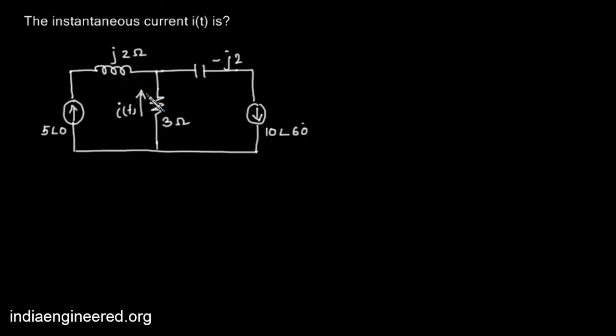The current that comes here will be 5 angle 0 and what leaves here will be 10 angle 60. Now we can simply write the KCL equation, that means I(t) plus 5 angle 0 equals 10 angle 60. That means I(t) is 10 angle 60 minus 5 angle 0.